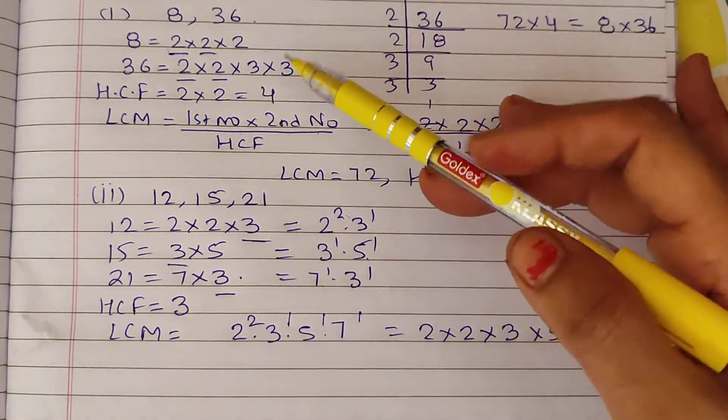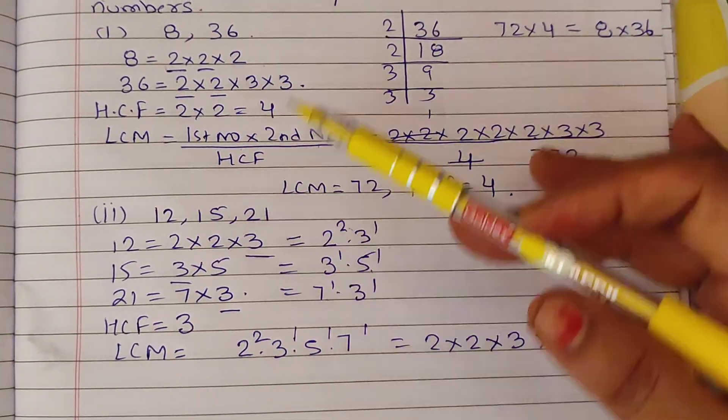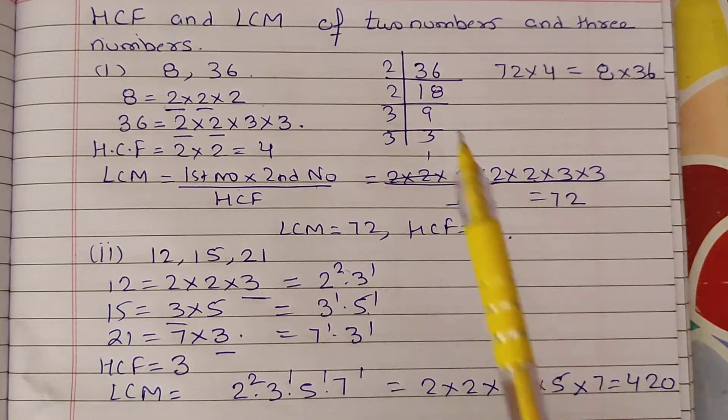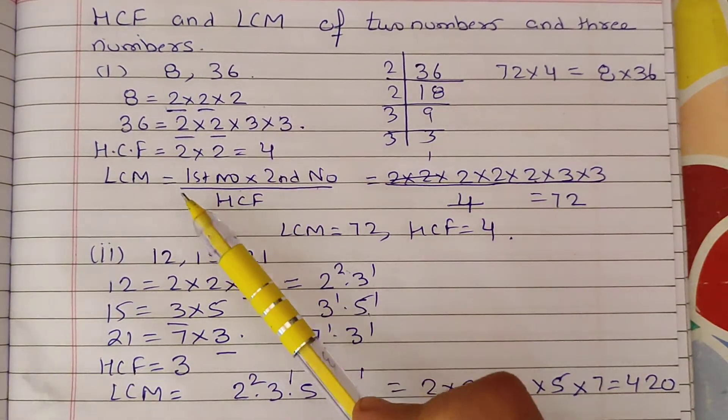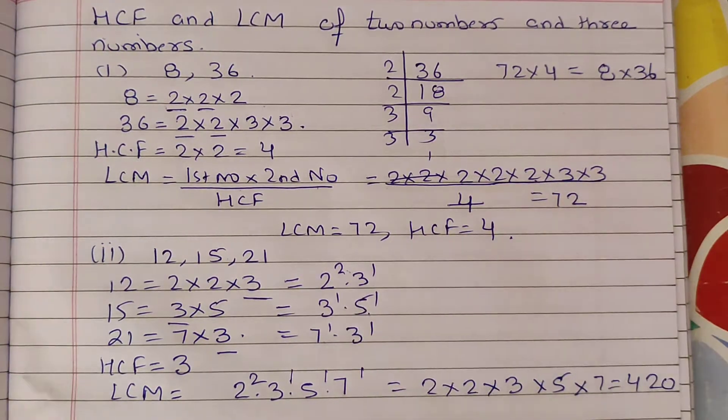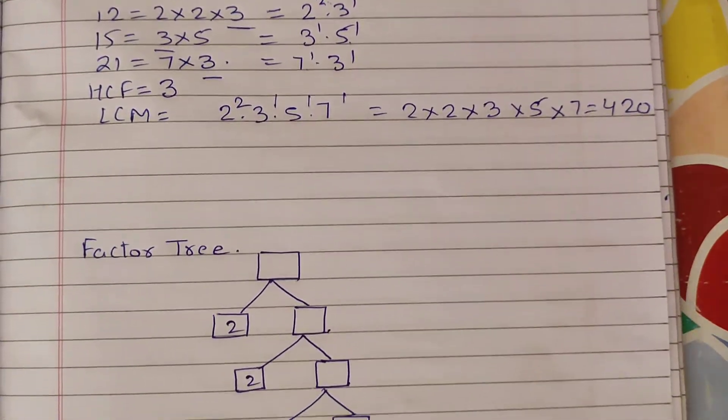And this is our method for two numbers. So we will use this statement. When there are two numbers, then LCM, HCF will come out. And when there are three numbers, then LCM, HCF will come out. Plus, we will do a very important question: the factor tree.